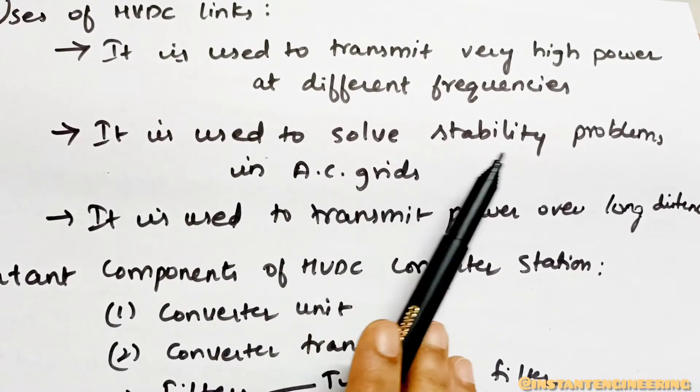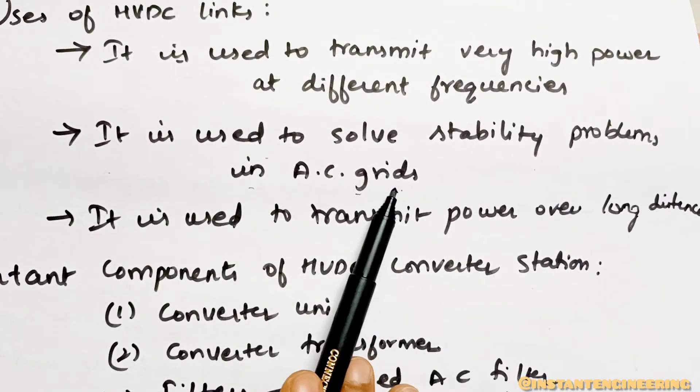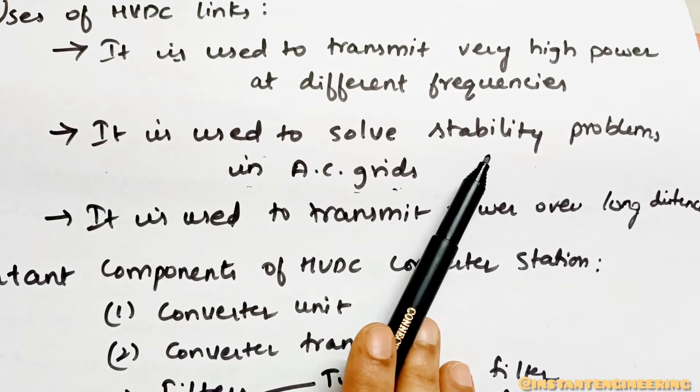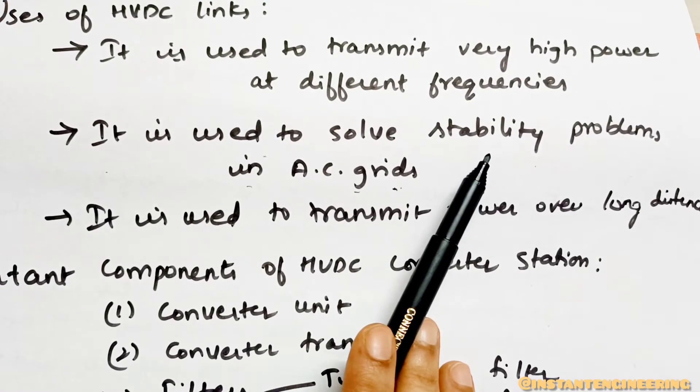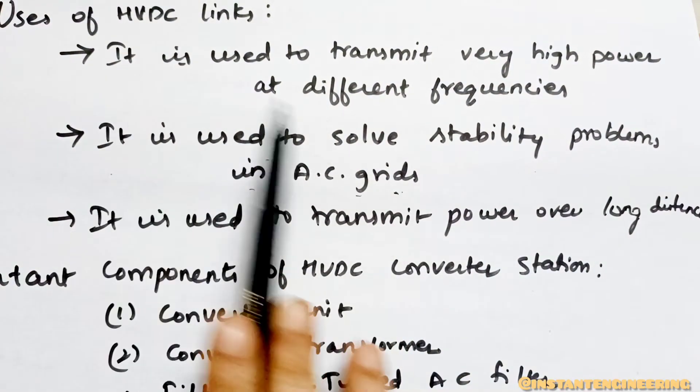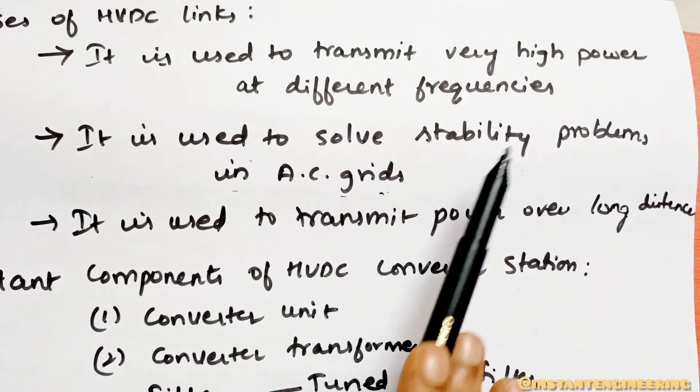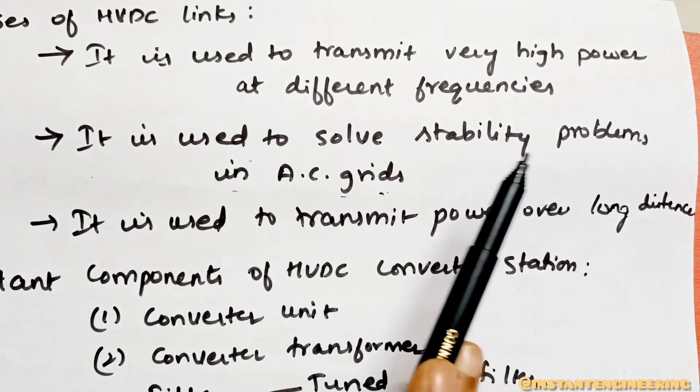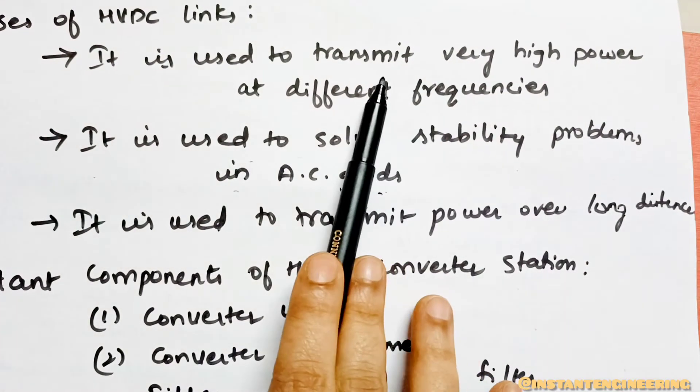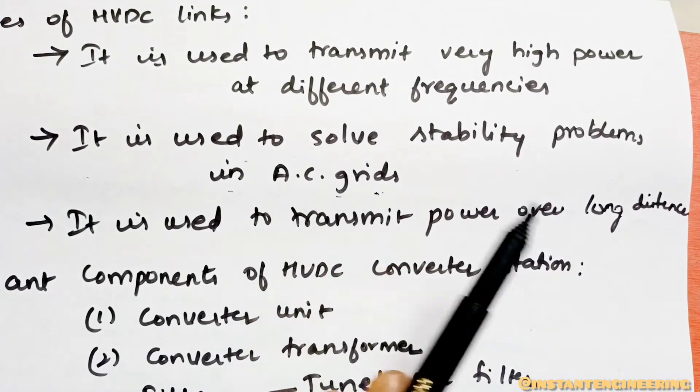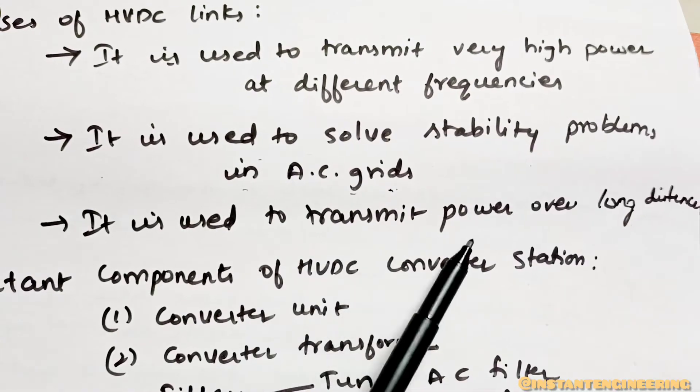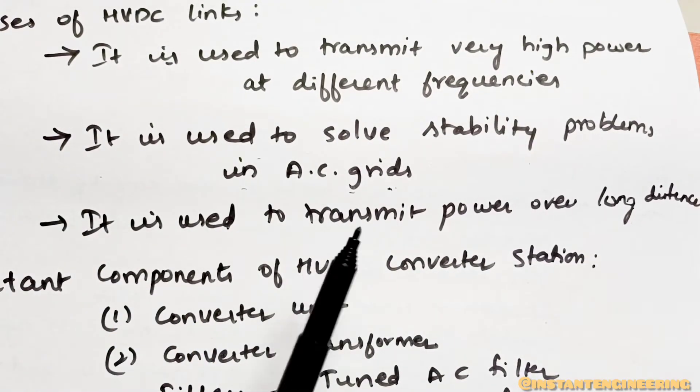It is used to solve stability problems in AC grids. If there is no stability in the powers, we will be using HVDC links where it will make the power stable. It is used to transmit power over long distance. Like I said, in transmission we should transfer the power to long distances. For long distance power transmission, we will be using HVDC links.